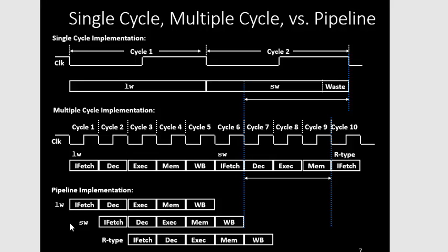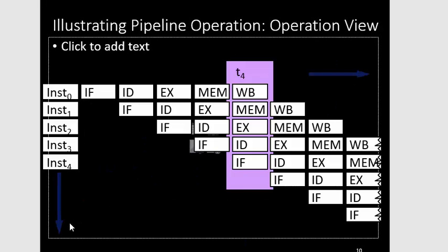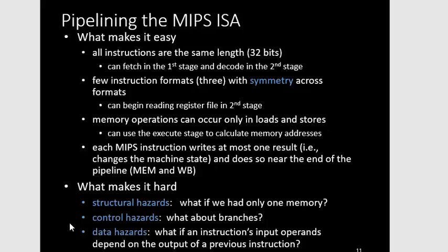The reason the next instruction cannot start from the very first clock cycle is that you cannot share resources. The same resource cannot be used by two different instructions at the same time — you always have one resource for each operation. So if two instructions both want to fetch, they'd have to share resources, which is not allowed.